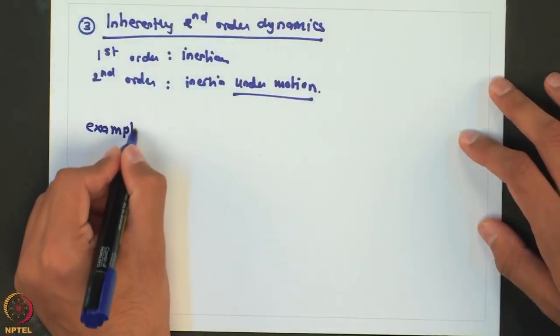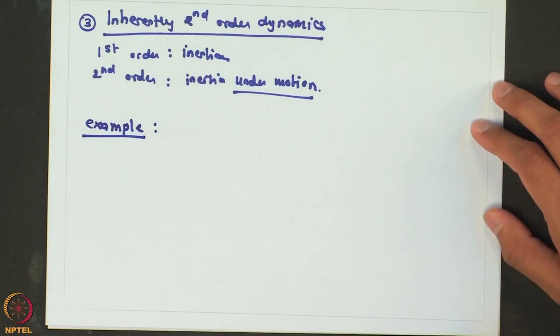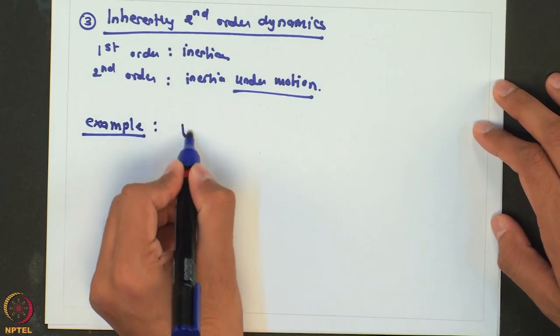Most of the times the second order systems we encounter will be either a series combination of first order systems or a first order system under integral control. Nonetheless, we will still cover this third way of getting a second order system because there are still some systems that demonstrate this behavior. These are quite common in other types of engineering, like mechanical systems, which are very often inherently second order. The reason is that most of the time they work with forces and displacement, and force is related to acceleration, which is the double derivative of displacement — that is the natural way of getting a second order dynamical system.